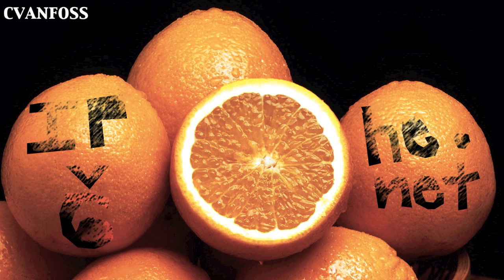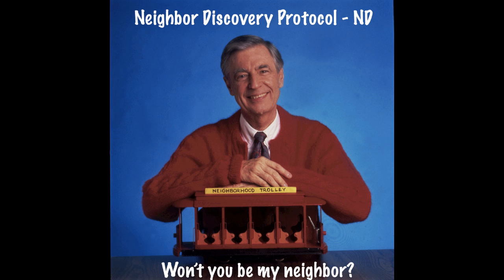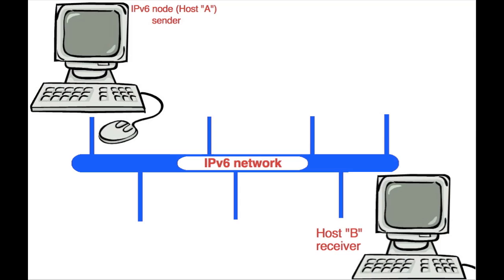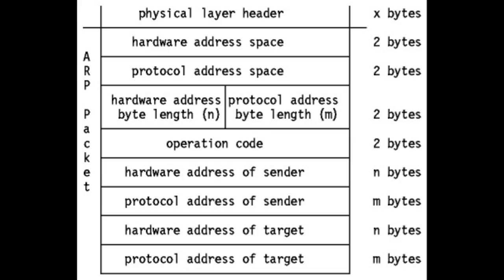Hi, this is Chris from Hurricane Electric with your IPv6 update. Earlier this week we had a question related to one of IPv6's mobility functions, namely the Neighbor Discovery Protocol or ND. Neighbor Discovery allows an IPv6 node to learn important information like interface link layer addresses which are on the same local segment of the network. You could consider it a replacement of ARP from IPv4.